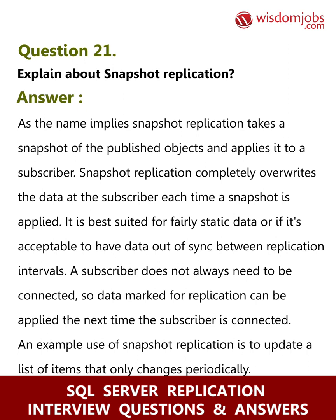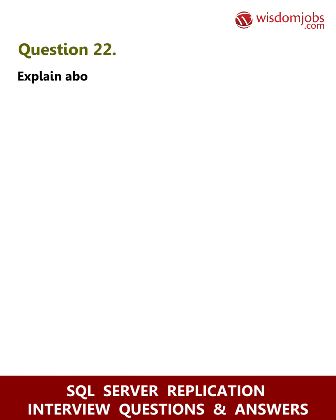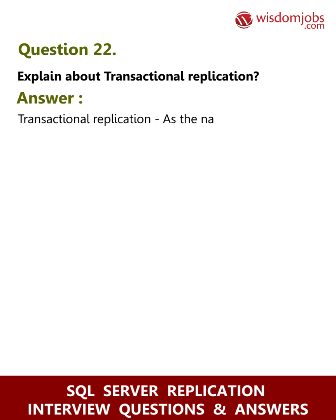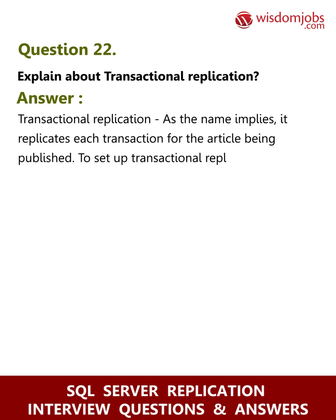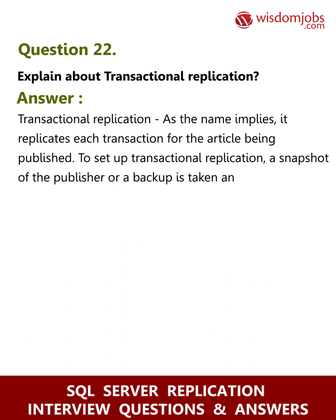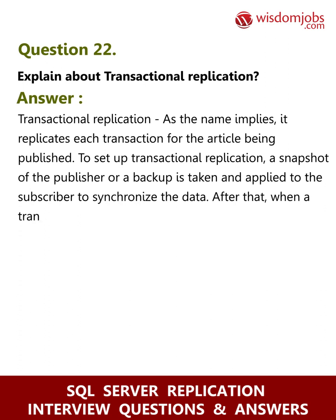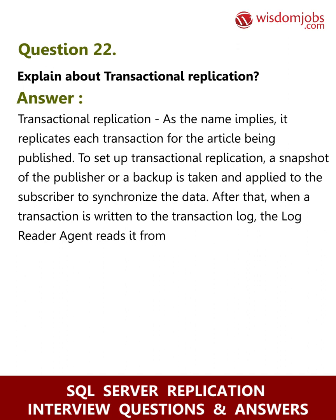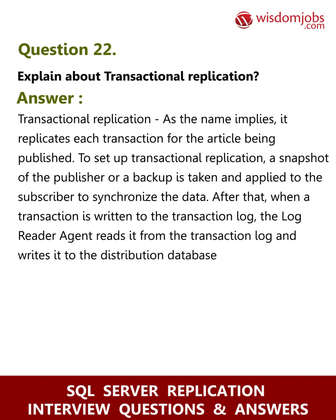An example use of snapshot replication is to update a list of items that only changes periodically. Question 22: Explain about transactional replication. Answer: Transactional replication, as the name implies, replicates each transaction for the article being published. To set up transactional replication, a snapshot of the publisher or a backup is taken and applied to the subscriber to synchronize the data. After that, when a transaction is written to the transaction log, the log reader agent reads it from the transaction log and writes it to the distribution database.